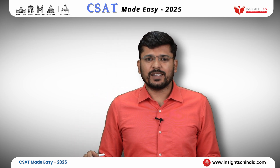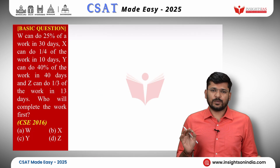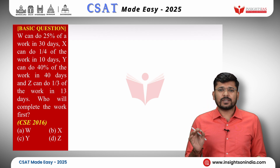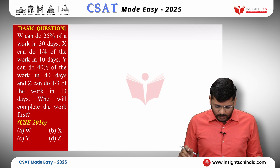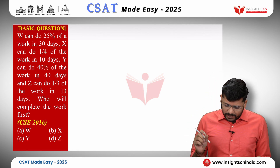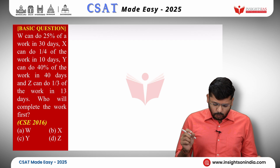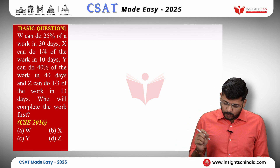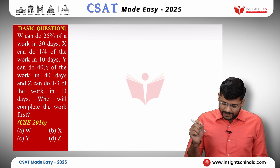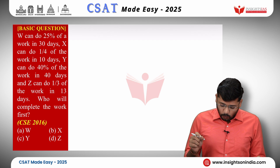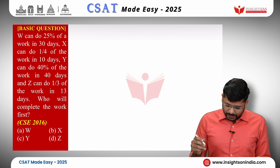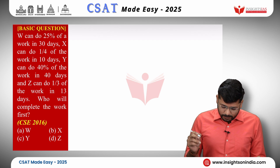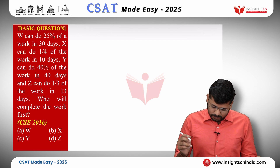We shall look at the first question. This is a very basic question and it was asked in the 2016 paper. W can do 25% of a work in 30 days. X can do one-fourth of the work in 10 days. Y can do 40% of the work in 40 days and Z can do one-third of the work in 13 days. Who will complete the work first?